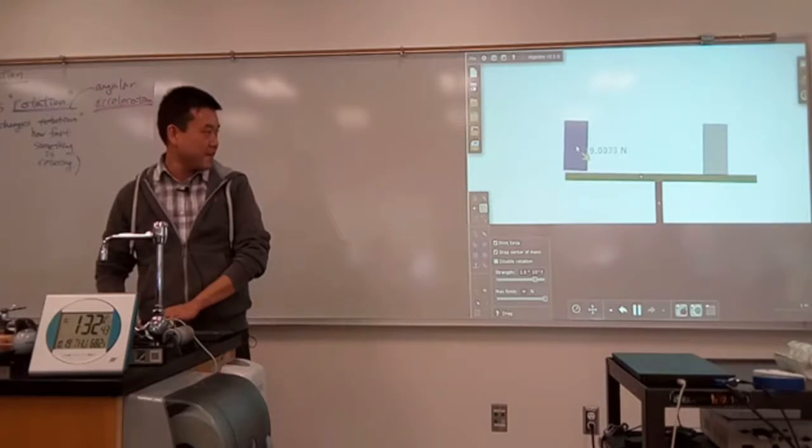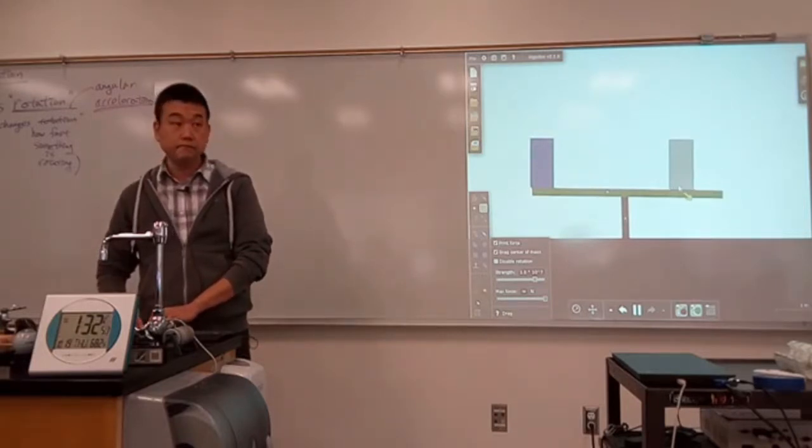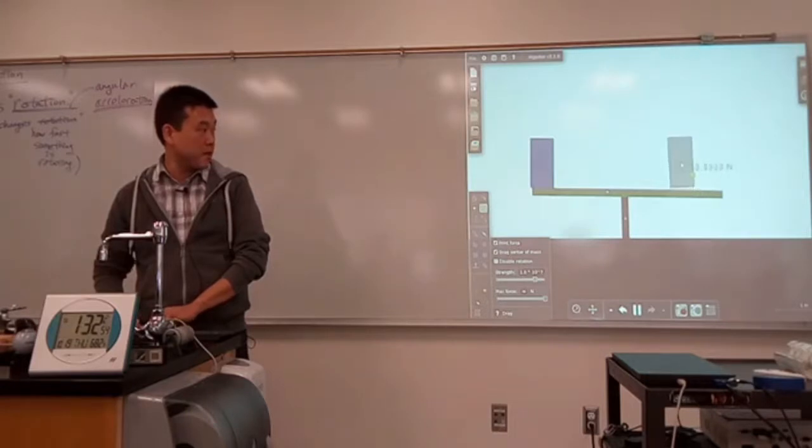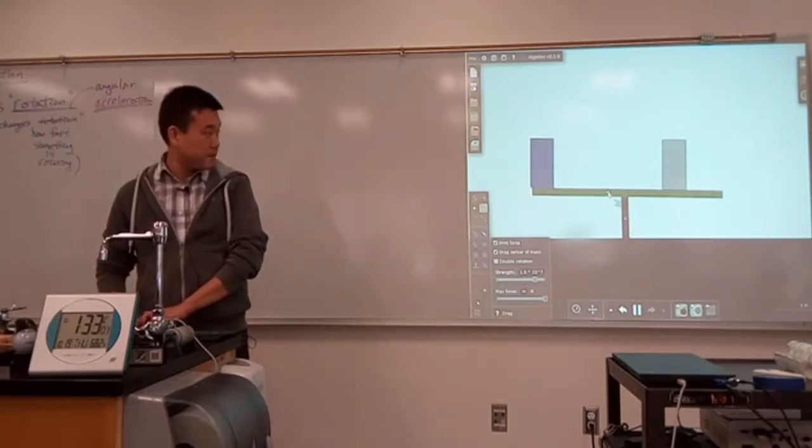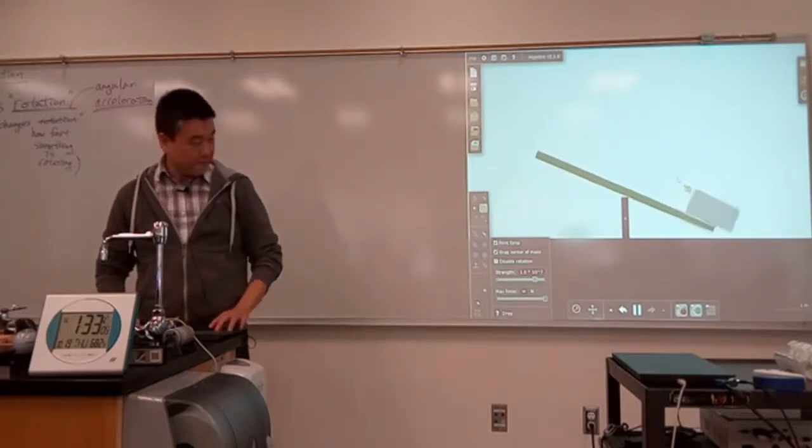If the lighter child is at the end of the seesaw, then the heavier child would be about how far away? Half of the way, right? I mean, that's the intuition that almost everyone has. Let's see if that works. I'm going to get rid of this fix. Yeah, they kind of balance. Not exactly.